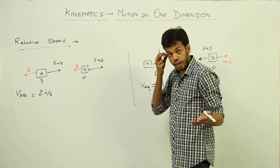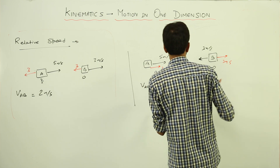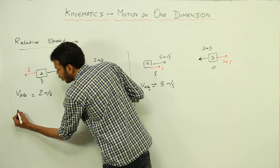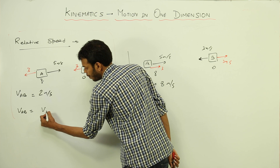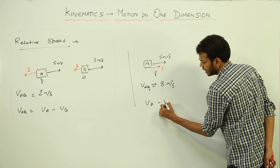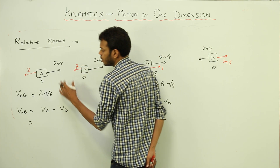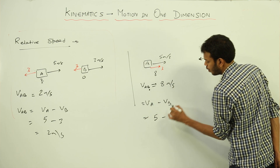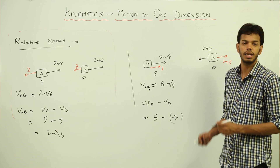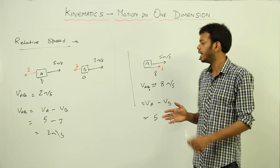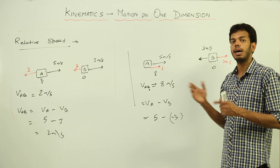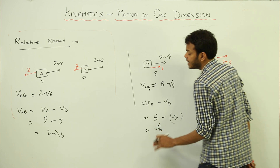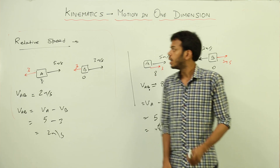There is also a formula for relative speed: V_AB = V_A minus V_B. For the same direction case, V_A is 5 and V_B is 3, so 5 minus 3 equals 2 m/s. For the opposite direction case, you must be direction-dependent — take the positive direction as the direction of A. Then V_B is minus 3, so V_AB equals 5 minus (minus 3), which gives 8 m/s. This is the basics of relative speed.